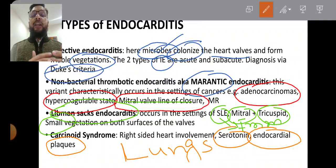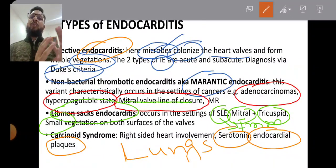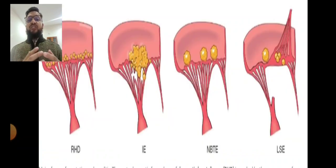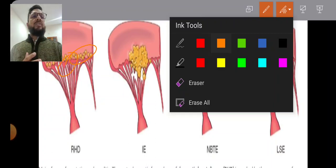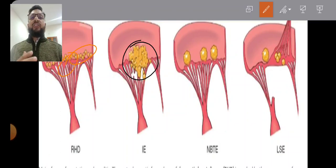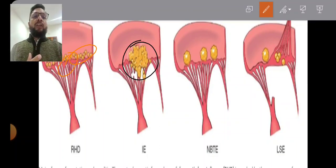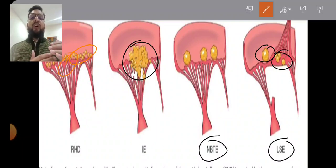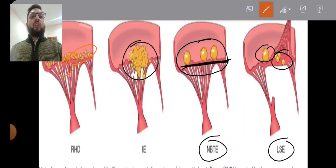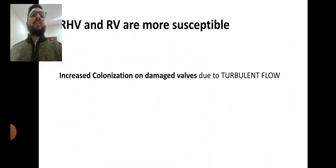Our main focus is infective endocarditis, caused by microorganisms such as bacteria and fungi. You can see small vegetations in rheumatic heart disease and larger ones in infective endocarditis. One important difference between non-bacterial thrombotic endocarditis and Libman-Sack endocarditis is that in NBTE only the line of closure is involved, whereas in Libman-Sack both the upper and lower surfaces of the valve are involved.